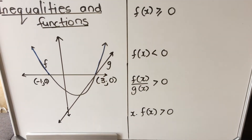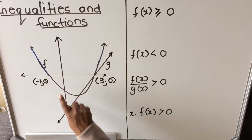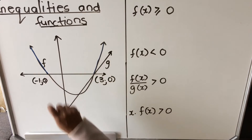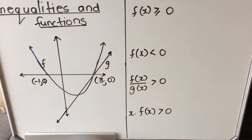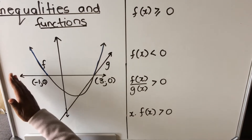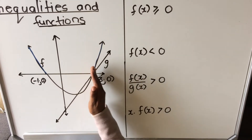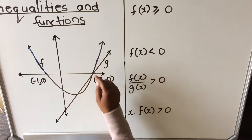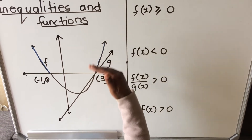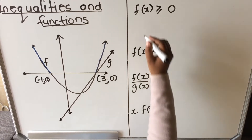Let me use a different color. We're talking about the f function, which is the parabola. Now let me look at the x-values. My x-value here at this point where it intersects with the x-axis is minus 1. So all the values smaller than minus 1, my function will be positive, and all the values bigger than 3, my function will be positive — my function will be above the x-axis.